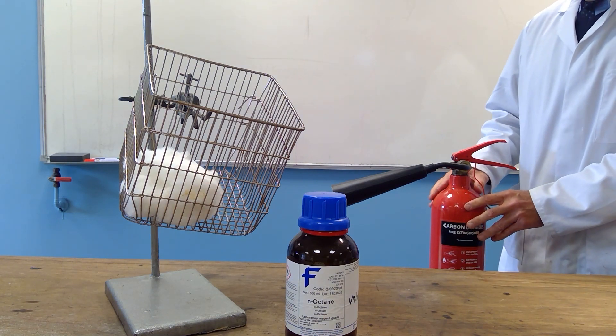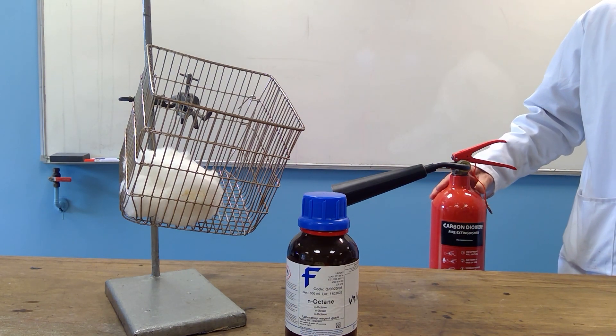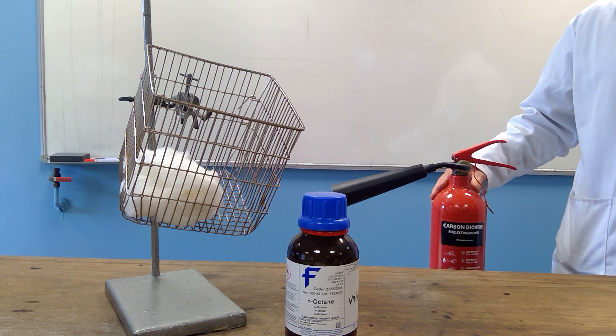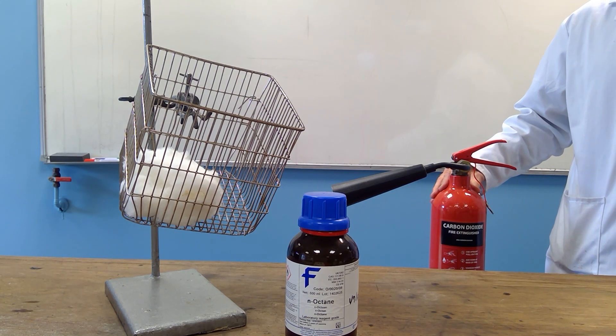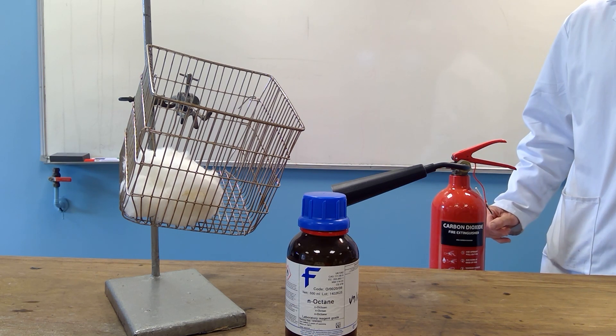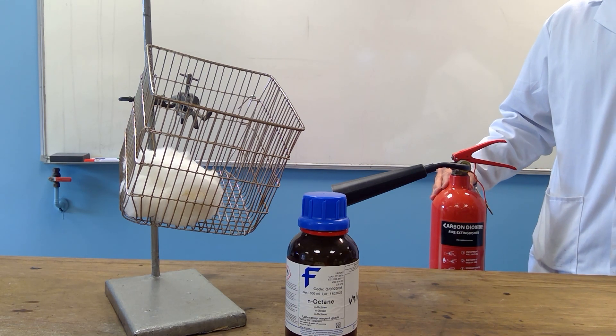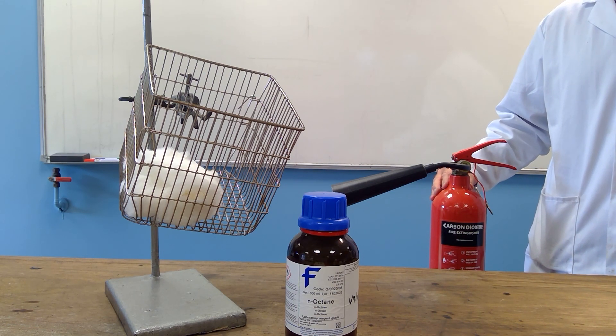The carbon dioxide in this fire extinguisher has been put under pressure. Carbon dioxide, when it is either cooled or placed under pressure, sublimes, which means that it turns directly from a gas into a solid. That solid is white in color and is often referred to as dry ice.